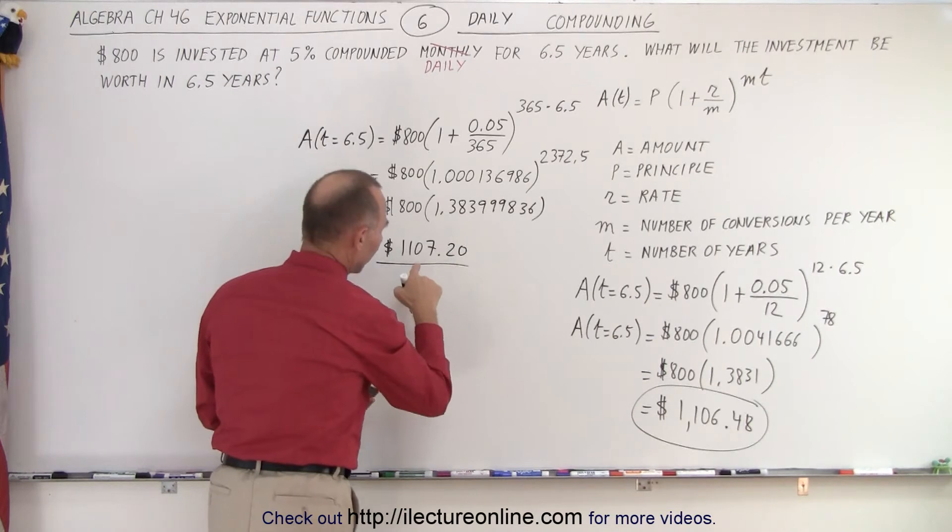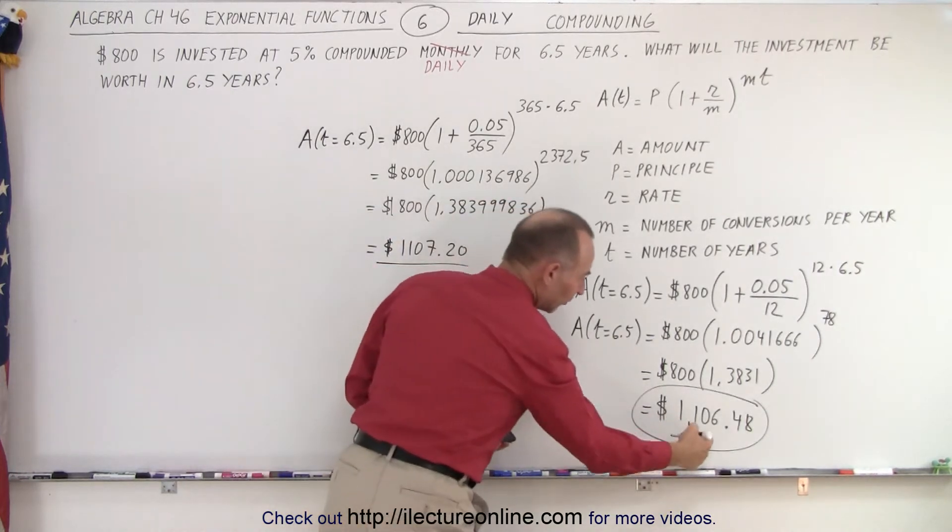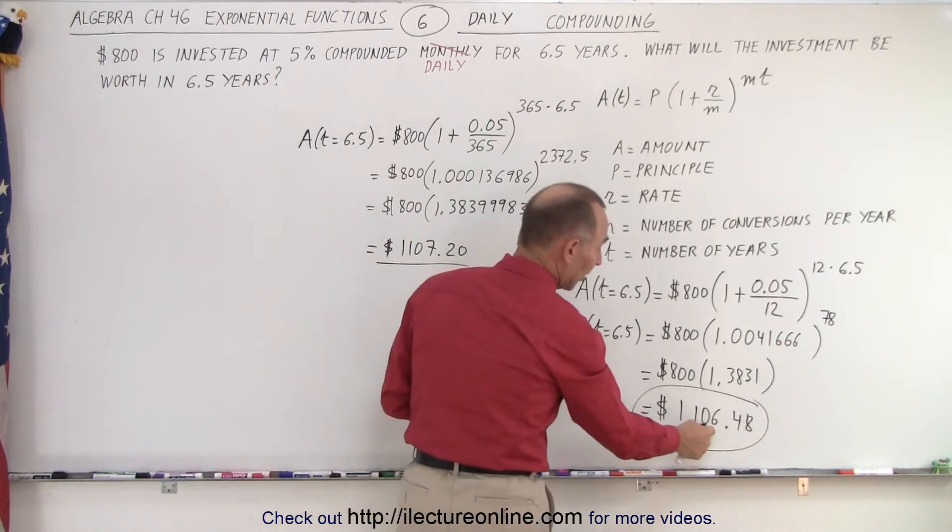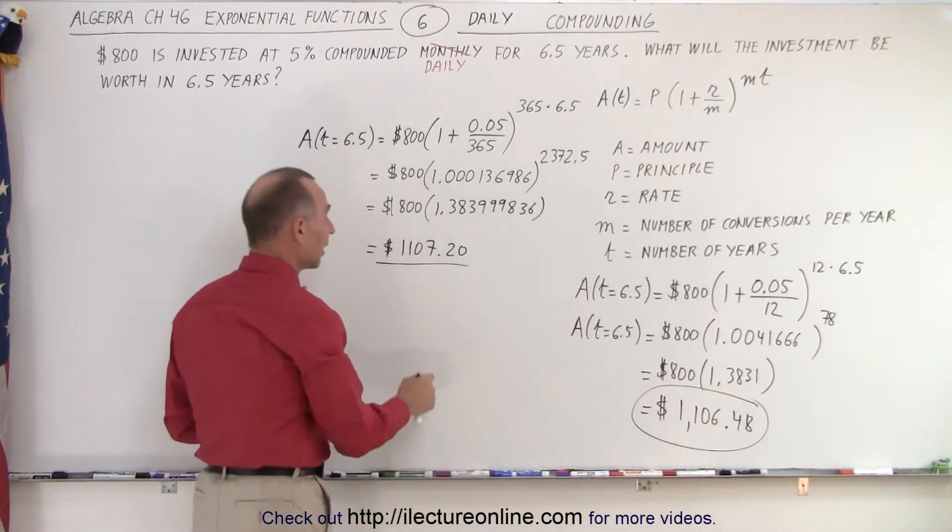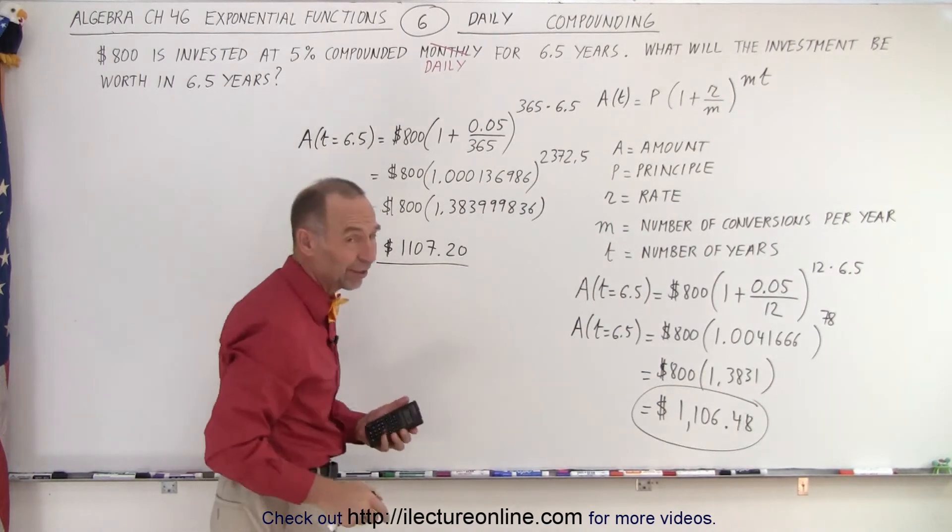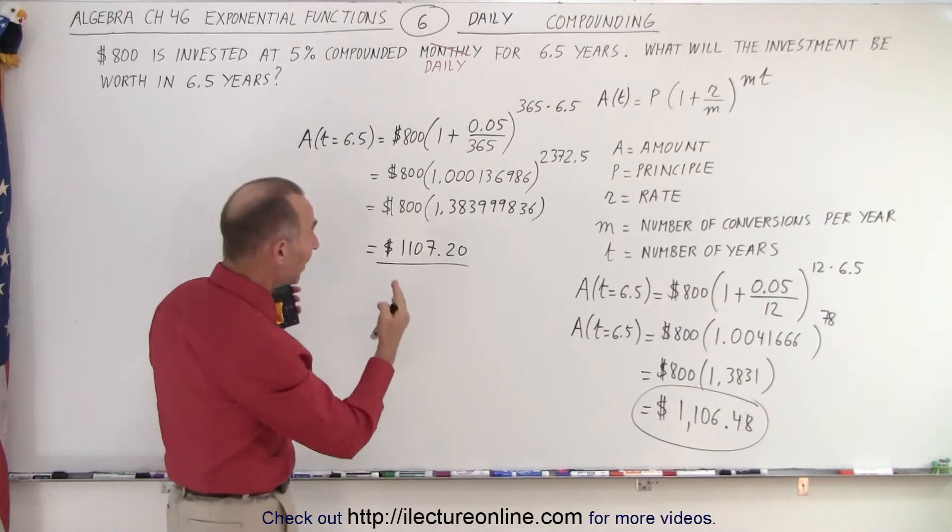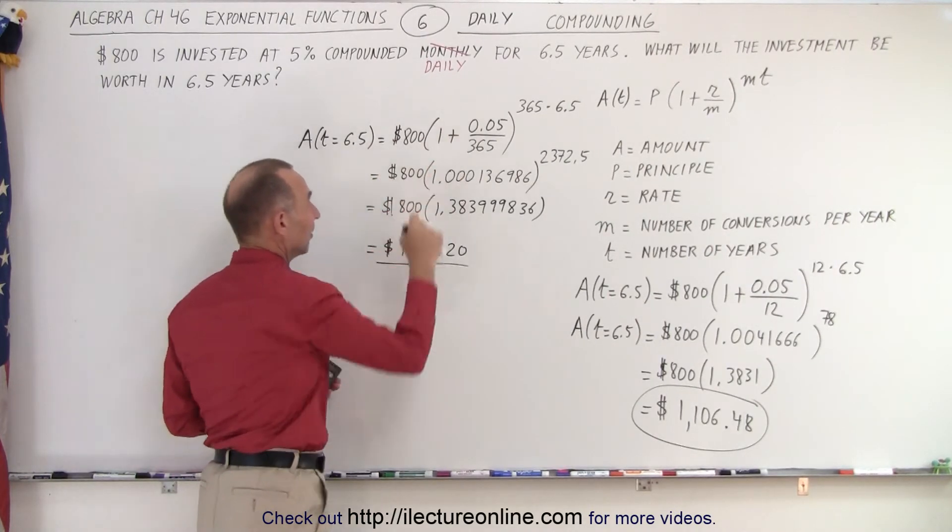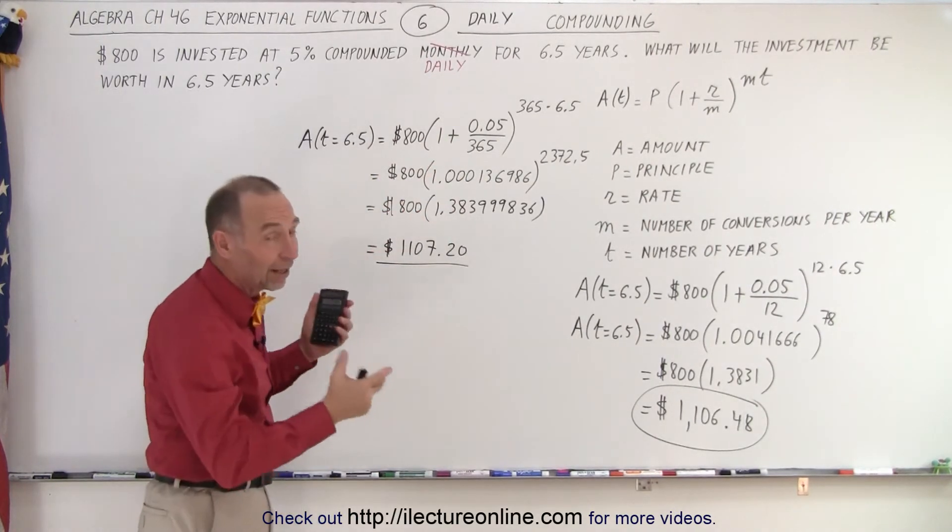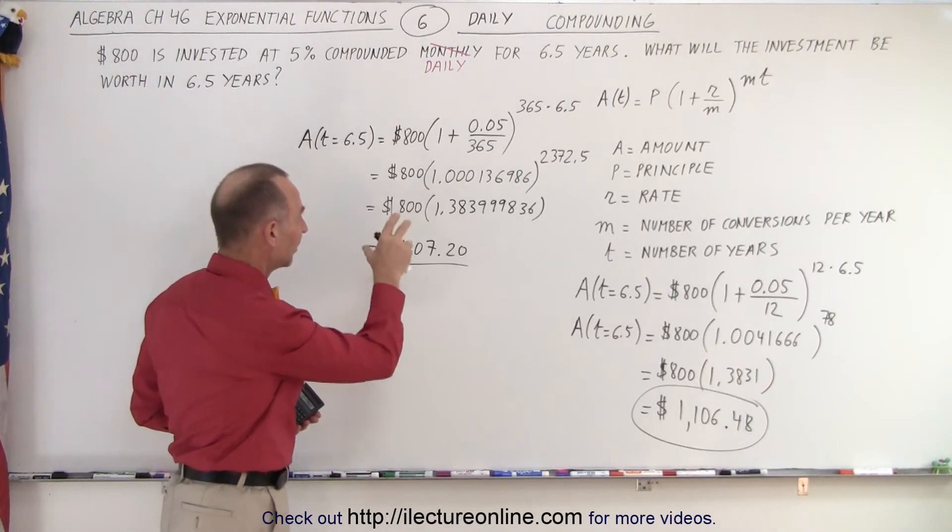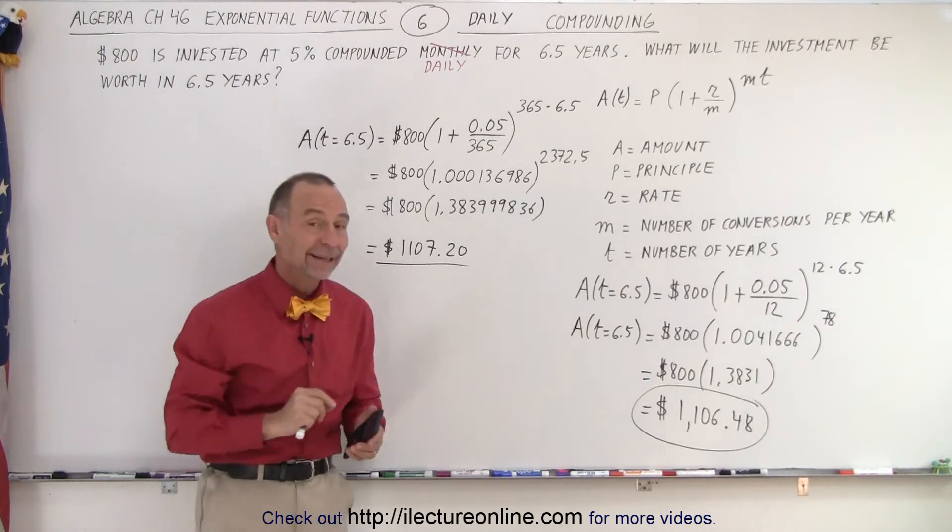Now, notice, compare this amount to this amount. So if we compound monthly, we end up with $1,106.48. When we compound it daily, we end up with $1,107.20. All banks these days compound daily, so this is what you would earn on an $800 investment invested at 5%. Not a lot of difference, a little bit of difference by going from monthly compounding to daily compounding, and that is how it's done.